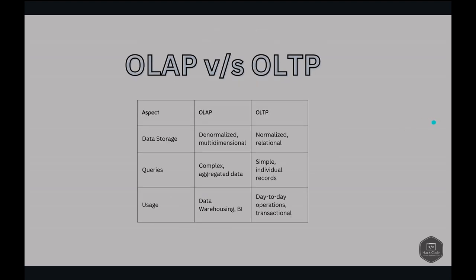Now let's compare OLAP and OLTP. With regards to data storage: OLAP is denormalized and multidimensional, whereas OLTP is normalized and relational. For queries: OLAP handles complex, aggregated data, while OLTP handles simple queries on individual records. For usage: OLAP is used in data warehousing and business intelligence, while OLTP is used in day-to-day operations and transactional processing.